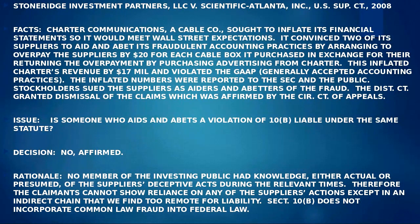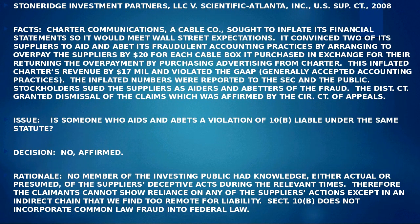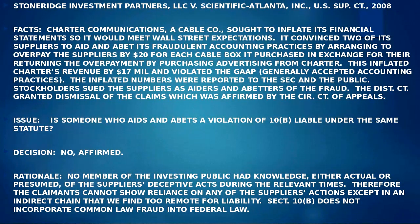In Stoneridge Investment v. Scientific Atlanta, the company sought to inflate its financial statements to meet Wall Street's expectations and convinced two of its suppliers to aid and abet its fraudulent accounting practices. The public wasn't aware of the company's arrangement with these suppliers. When the stock ultimately went down, stockholders in a class action suit sued the aiders and abettors. However, because the stockholders didn't actually know about the aiders and abettors' participation in the fraud, the aiders and abettors were not liable to the investors.